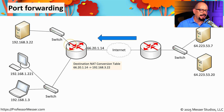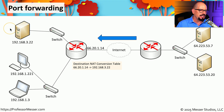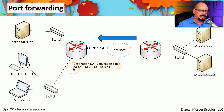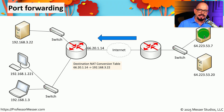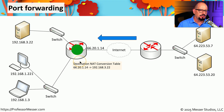In our example, the SOHO router is connected to a couple of switches, and on the internal network we have an internal web server, a laptop, and other devices. We would like to give people on the internet access to the web server inside our network, but people on the internet cannot connect to a private IP address inside our firewall. So we create a port forward configuration that says: if anybody connects to our public IP address 66.20.1.14, translate that to 192.168.3.22 — the IP address of our internal web server. When traffic arrives at the router, it looks up the conversion table and performs the translation, sending traffic to the internal web server.